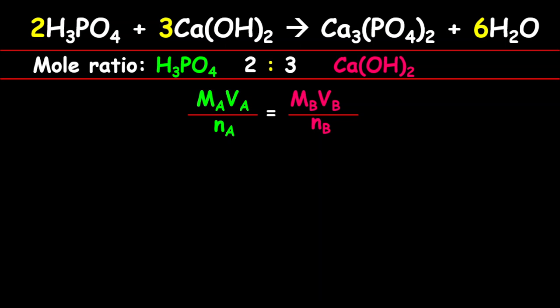Now let's look at our question and plug our variables into the equation. Remember, we do not have the molarity of the acid; we need to find that. So MA is multiplied by the volume that was given, which is 25, divided by 2 because there are two moles of H₃PO₄ required in the balanced chemical equation.